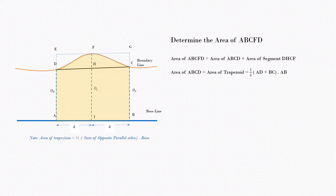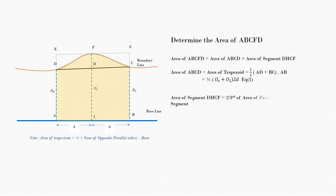The area of ABCD, that is the area of the trapezoid, can be given as half times the sum of the opposite sides into the base. From the figure, that is half times (AD + BC) multiplied by the base AB. AD and BC are the offsets O0 and O2, so this equals half × (O0 + O2) × 2D. D is the interval formed between each offset. Therefore, area of ABCD = D × (O0 + O2), which is equation 1.